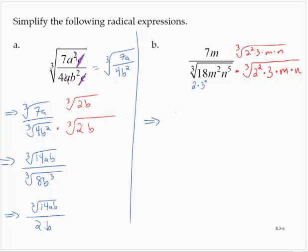All right, so that would give me 7m by the cube root, now 2 squared is 4, 4 times 3 is 12, 12mn.